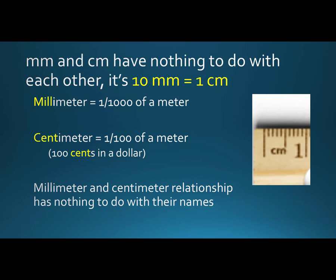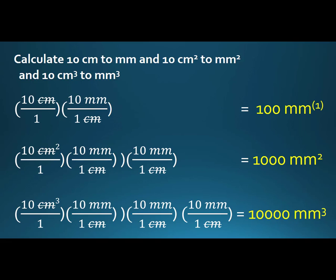But the better way to do it is to think, okay, 10 millimeters equals one centimeter like I told you about the ruler. Now in terms of making the conversions, we'll do 10 centimeters to millimeters, then 10 centimeters squared to millimeters squared, then 10 centimeters cubed to millimeters cubed.